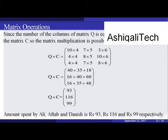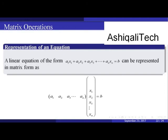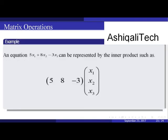A linear equation of the form a1·x1 + a2·x2 + ... + an·xn = b can be represented in matrix form as the product of row vector [a1, a2, ..., an] and column vector [x1, x2, ..., xn] equal to b. For example, the equation 5x1 + 8x2 - 3x3 can be represented as the inner product [5, 8, -3] · [x1, x2, x3].